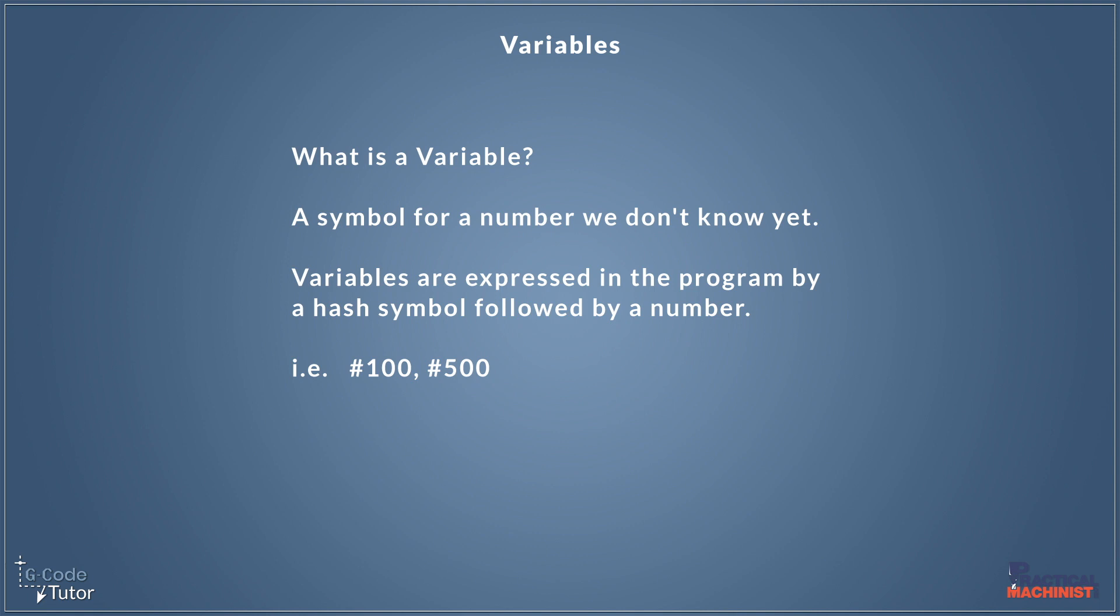So when we define variables in G-code, it looks like this, like hash 100, hash 500, et cetera. So this is what our variables look like. Whereas in maths, it may be represented by a letter. In G-code, it's represented by a number that follows a hash symbol.